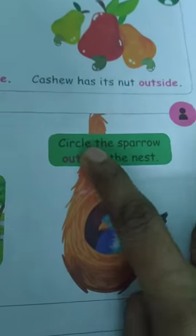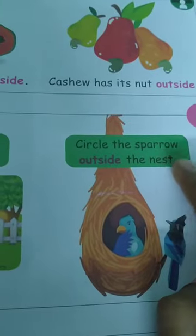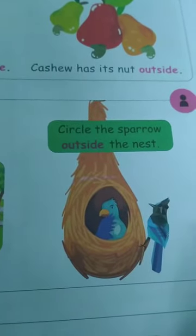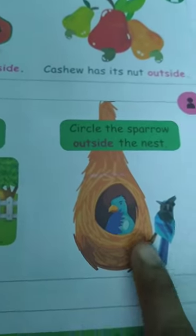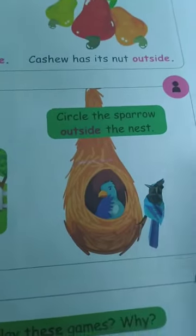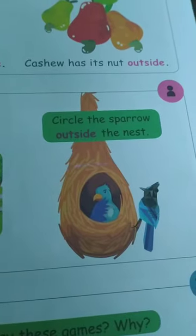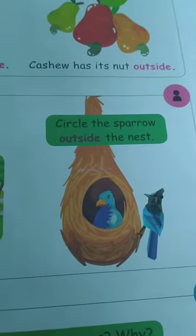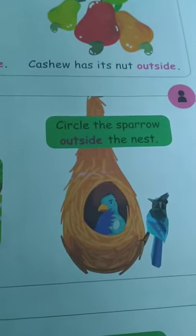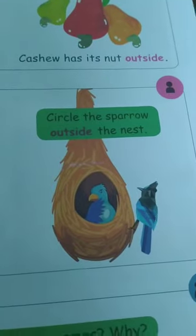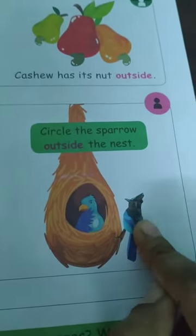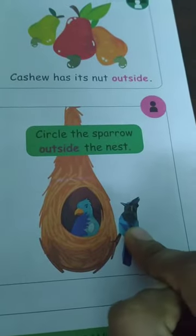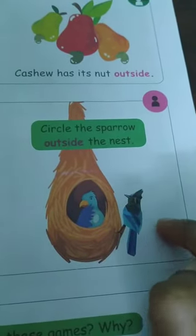Circle the sparrow outside the nest. We want to circle the sparrow which is outside. Which sparrow is outside? What does 'outside' mean? Outside means the outer part, that means the unsafe place. First one or second one? Yes, the second one only is outside the nest. So we want to circle that sparrow.